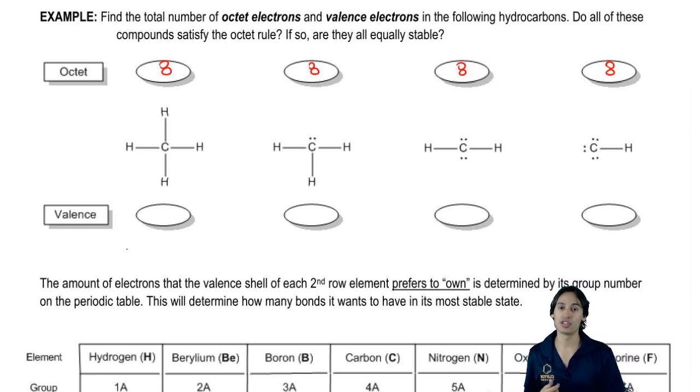The way that we count valence electrons, remember we count dots and sticks. So what I want you guys to do now is count what are the valence electrons for all of these. Let's start off with the one on the left. How many sticks does it have? Four. How many dots does it have? Zero. So it would have four valence electrons.